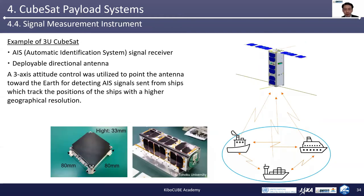The next example is the signal measurement instrument. Recently, receiving and analyzing ground-based AIS signals — the automatic identification system signals — from space is attracting interest. In this case, the receiver and the deployable directional antenna systems are the payload. A 3-axis attitude control is utilized to point the antenna toward the Earth for detecting AIS signals sent from ships on Earth, enabling tracking the positions of ships with a higher geographical resolution.